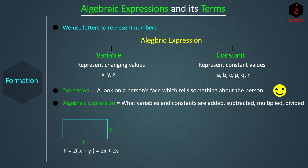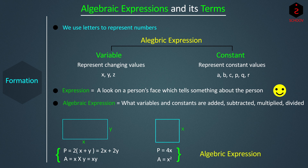By adding 2X and 2Y, we get the expression 2X + 2Y. The area of the rectangle is X × Y, that is XY, which is again an algebraic expression. The perimeter of a square of side X is 4X, and its area is X². These are some examples of algebraic expressions.